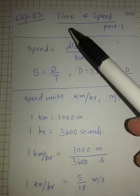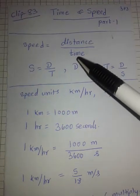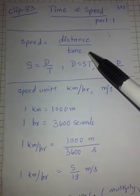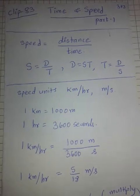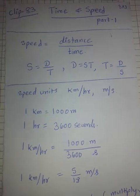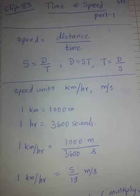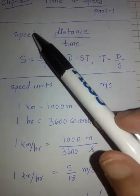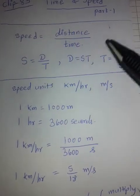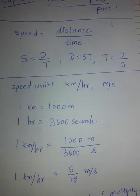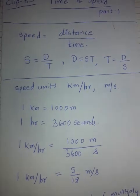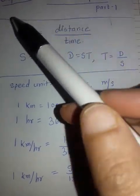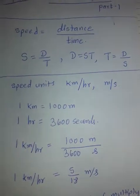The positive side of Time and Speed is that you need to remember only one formula: Speed is equal to Distance upon Time. There are some shortcut formulae we will cover in coming parts — Part 2, Part 3, Part 4 — but even if you forget those shortcuts, if you understand the use of this formula, you really don't require any other formula. Whatever examples I solve in every part, I will show you how to use this simple formula instead of using different shortcuts.